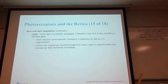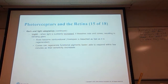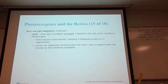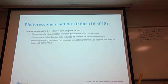When light is suddenly increased, it bleaches the rods and cones, resulting in a blinding glare. Rods become nonfunctional — the rhodopsin is bleached as fast as it can be regenerated. Cones can regenerate functional pigments much faster, so they are able to respond within a few minutes as their sensitivity increases. For example, when you go from a darkened movie theater and step outside into a very bright, sunny afternoon, you get terrible glare and can hardly see anything for several seconds before your eyes begin to adjust.